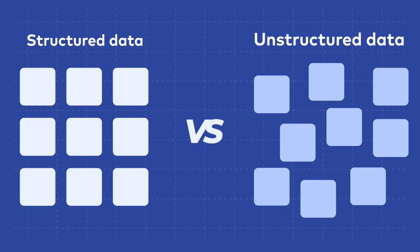The key difference between these types lies in organization. Structured data is highly organized and easily searchable, while unstructured data is more complex but often more valuable. In fact, it's estimated that 80% of the world's data is unstructured. Imagine how much untapped potential is out there.